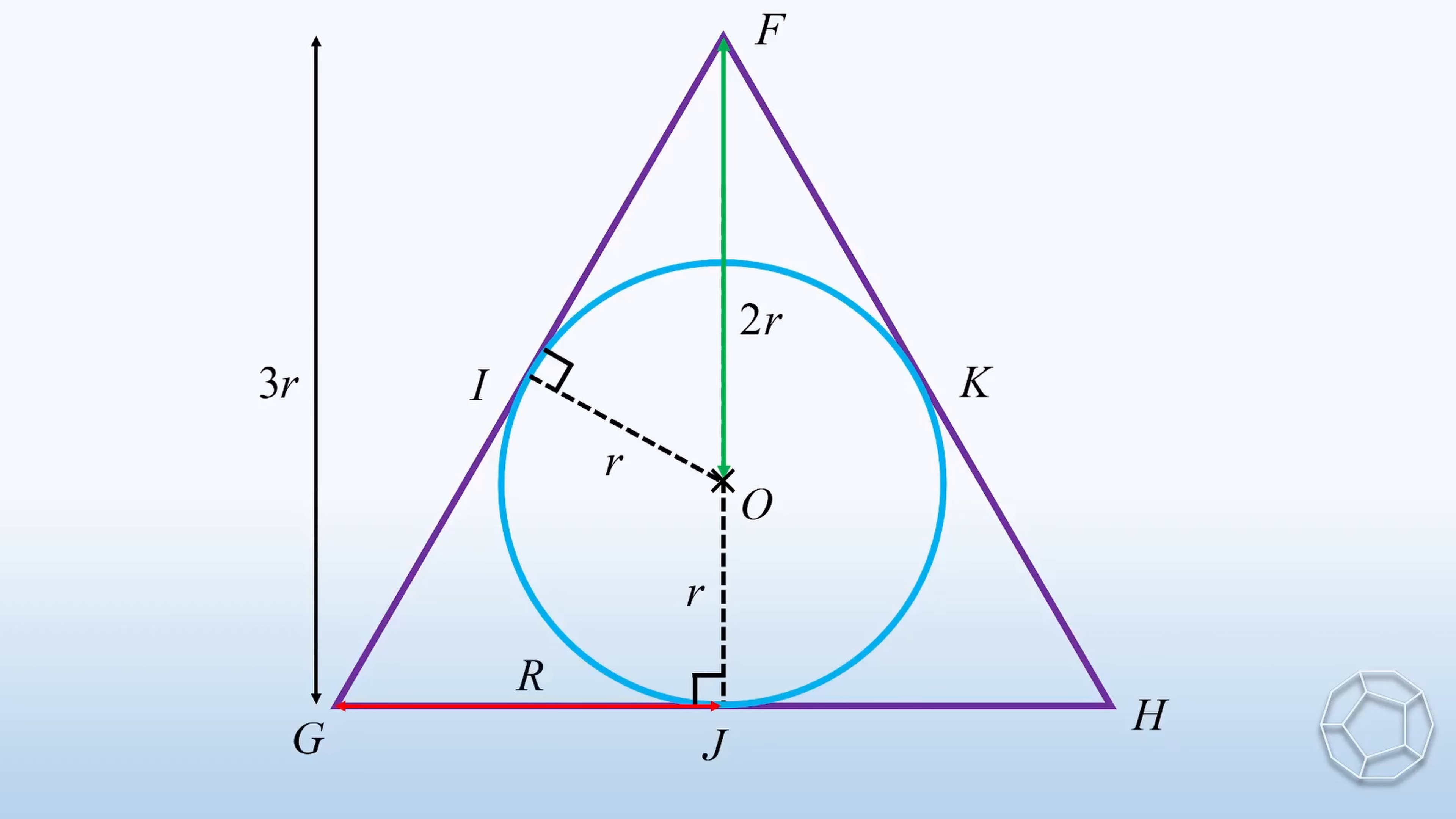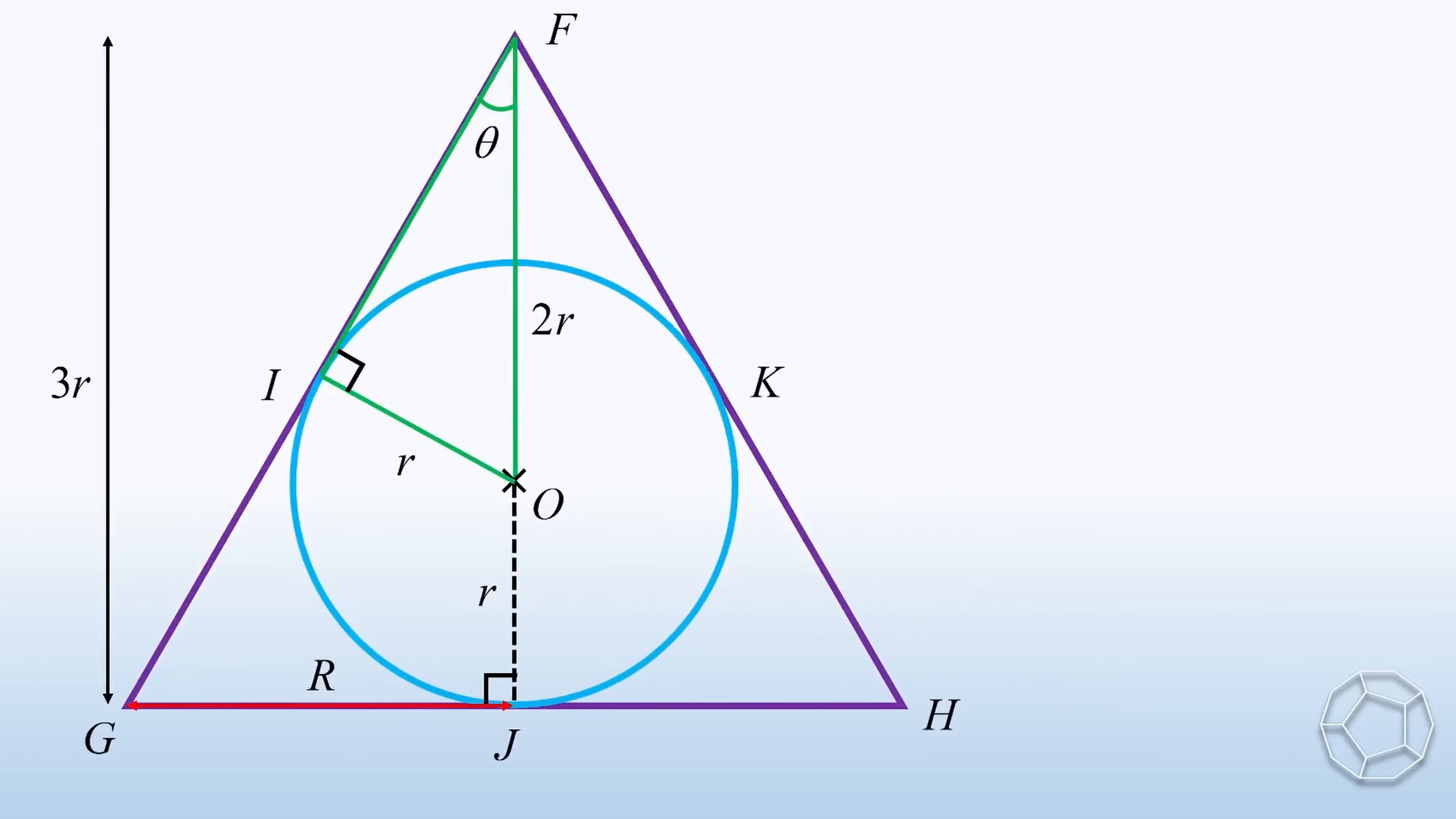It comes to the key point of this part, which is the angle theta. Do we know how large it is? Definitely. Let's consider the green triangle. Here, sine theta is equal to r over 2r, which is equal to 1 over 2. So theta is equal to 30 degrees.